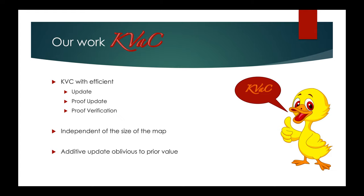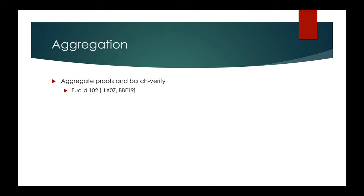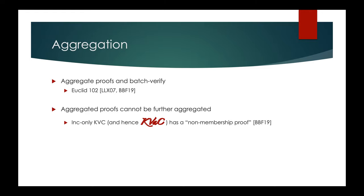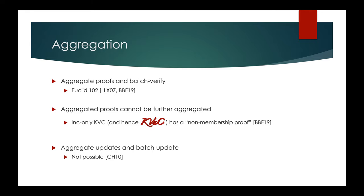That's our entire construction. QUACK gives you an efficient, succinct key value commitment whose operations and size are independent of the size of the map, and you can perform additive updates oblivious to prior values. On aggregation: aggregation is possible — we can aggregate proofs and batch verify them using Euclidean arithmetic — but aggregated proofs cannot be aggregated further, because the increment-only key value commitment and hence QUACK has a non-membership proof. The π2 and π3 in the increment-only construction are essentially a non-membership proof of z in π1, inherited in QUACK, and these aggregated proofs cannot be aggregated further. This is also a limitation in the work of Boneh et al. Batch updates are also not possible, as noted by prior work.